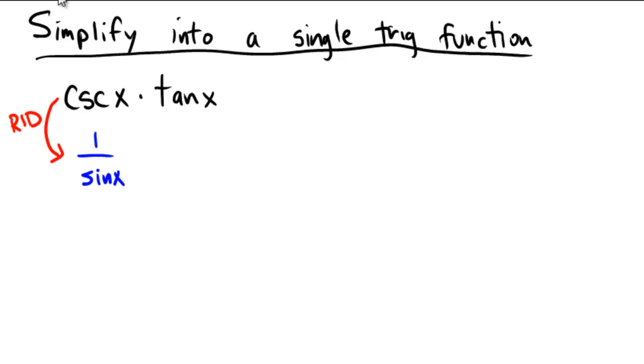Now, tangent. Tangent is sine of x over cosine of x. This is called a quotient identity. So in my class again we're going to use an abbreviation called the QID for the quotient identity.